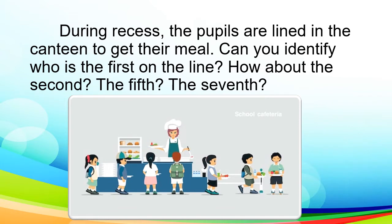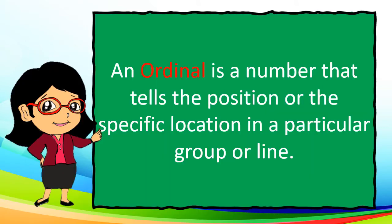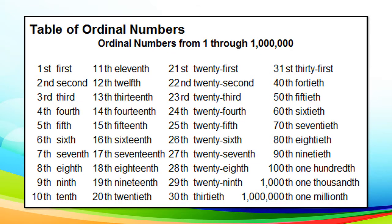I have here a story problem. During recess, the pupils are lined up in the canteen to get their meal. Can you identify who is first on the line? How about the second, the fifth, and the seventh? These are what we call ordinal numbers. An ordinal number is a number that tells the position or the specific location in a particular group or line.